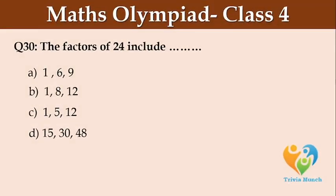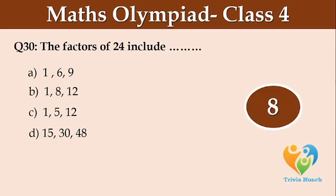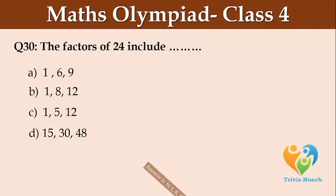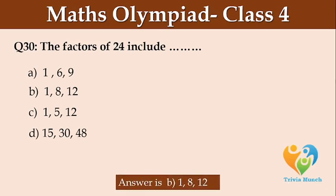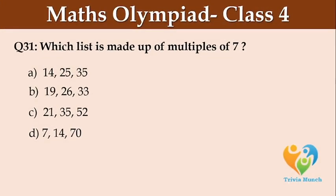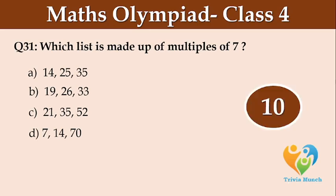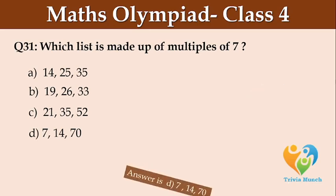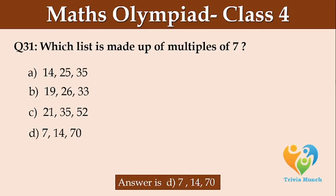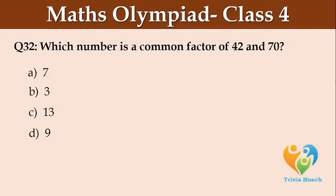The factors of 24 include blank. Which list is made up of multiples of 7? Which number is a factor of both 42 and 70?